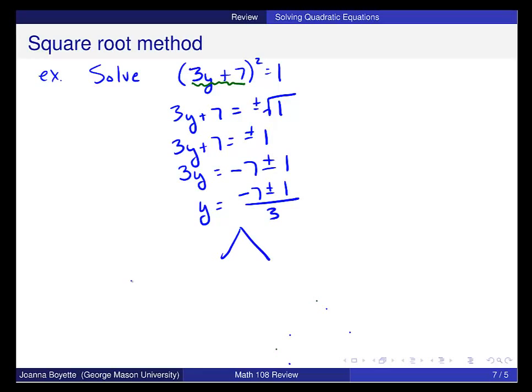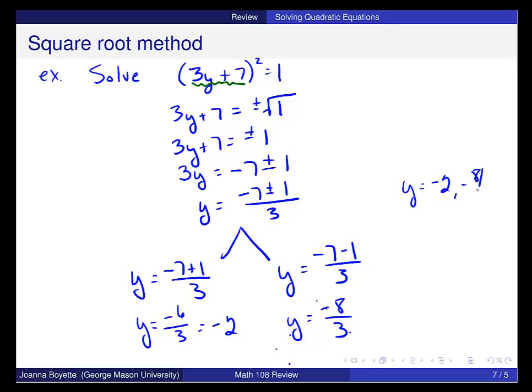This is really two solutions, y is equal to negative 7 plus 1 over 3, and y is equal to negative 7 minus 1 over 3. Negative 7 plus 1 is negative 6, so I get negative 2, and here it's negative 8 over 3. So my two solutions are negative 2 and negative 8 thirds.